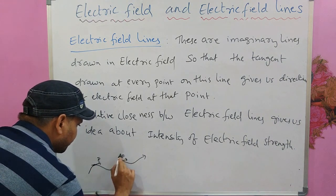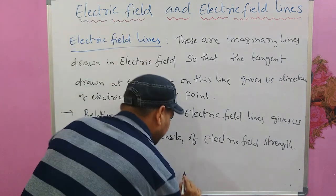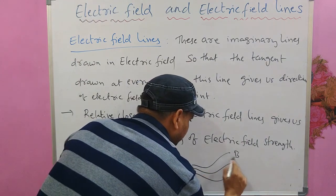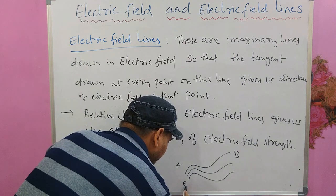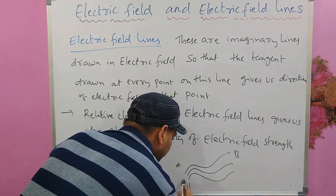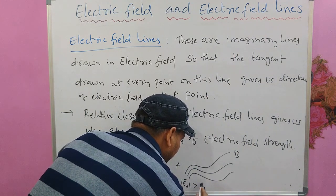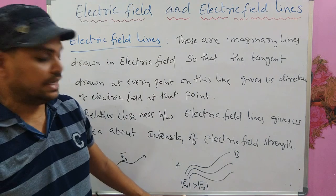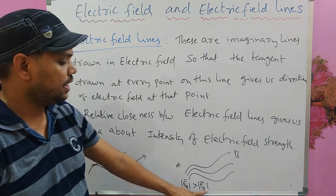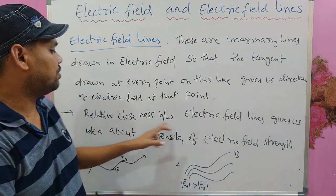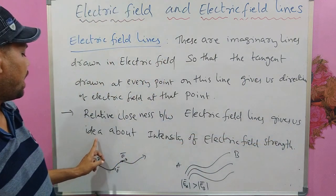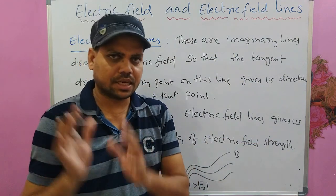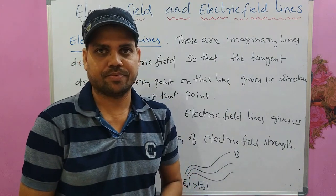The second property of electric field lines is that the relative closeness between electric field lines gives us an idea about the intensity of electric field strength. For example, if this is point A and point B, and the electric field lines are very close at point A but not close at point B, then the intensity of electric field at point A is greater than at point B.